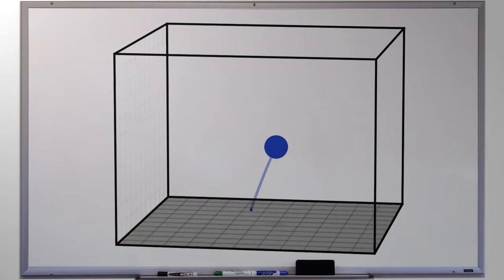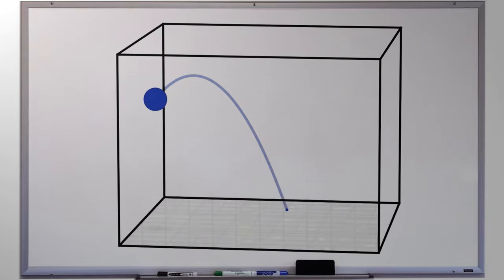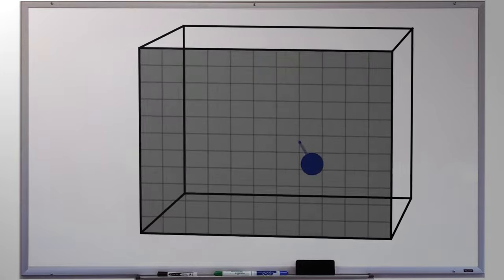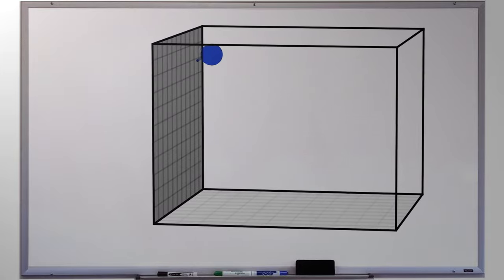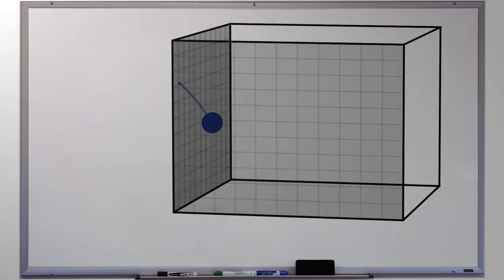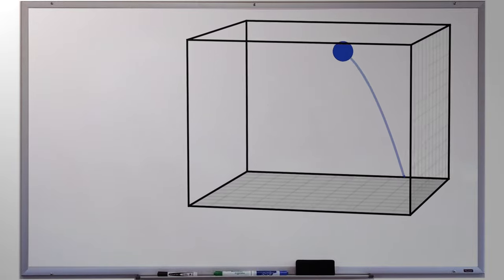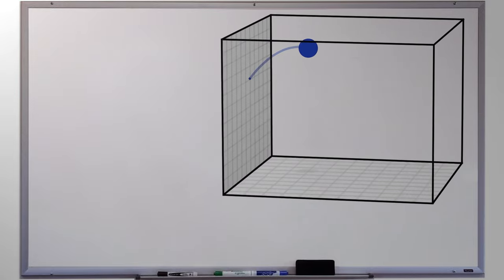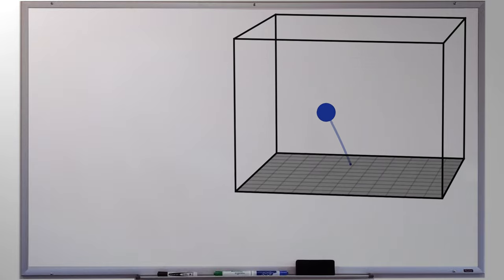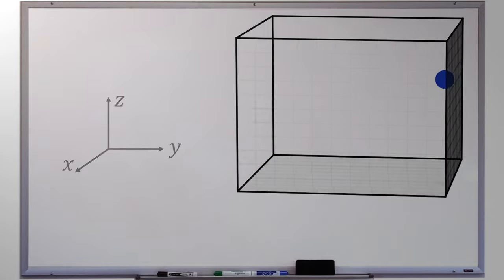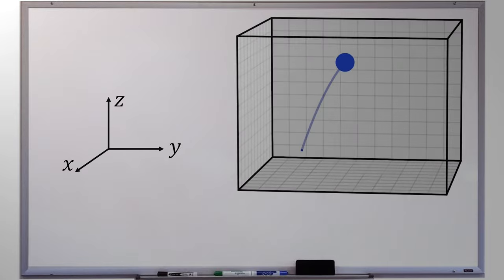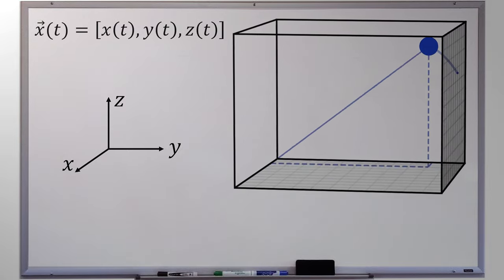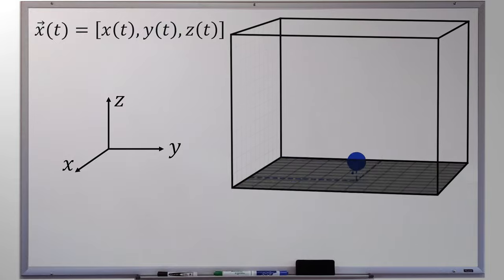In order to precisely understand the motion of the ball, we'll first need to develop a vocabulary. Concepts are downstream from words — where everyone cannot speak, there everyone must remain silent. So the first thing we have to do is to precisely define what we mean by motion. There is perhaps no simpler way to define where a ball is than by listing its coordinates x, y, and z at any moment in time. This set of numbers x, y, and z can also be thought of as a vector.